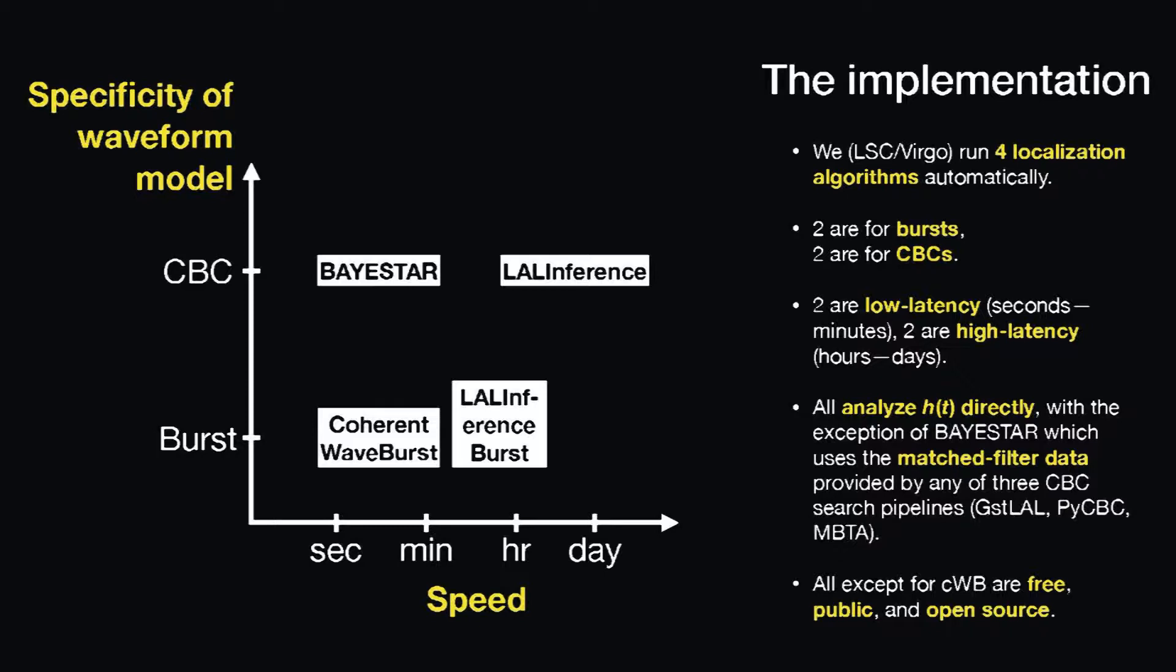We have a number of actual implementations of the localization. We have two algorithms that we use for unmodeled burst signals and two algorithms that we use for compact binary mergers. Two of those are low latency and take a few minutes, and two of those are high latency but incorporate a lot of additional physics and details about the detector, and take hours to days. If you plot speed versus how model dependent the algorithm is, they're arranged like this. Basically, they all analyze H of T directly except for Bayestar, which is our rapid compact binary localization code that only looks at the match filter time series.